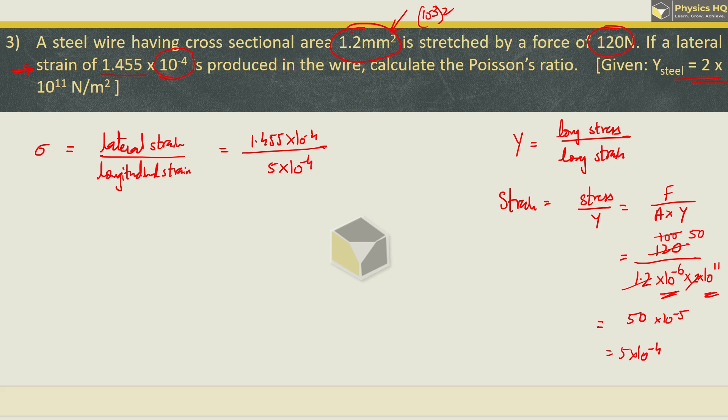Let us cancel out this. And 1.455 / 5, you will get the answer is 0.291. Hope you all understood this. Next we will see.